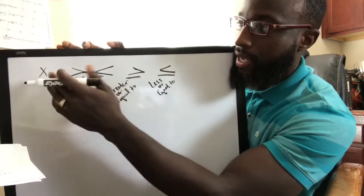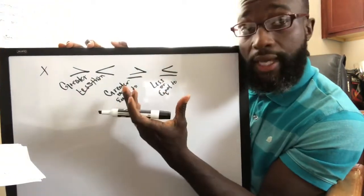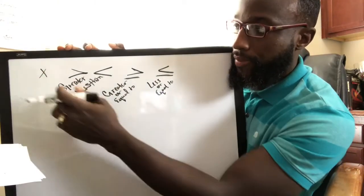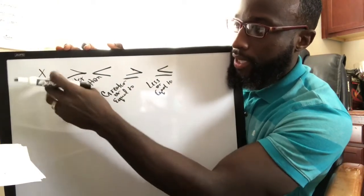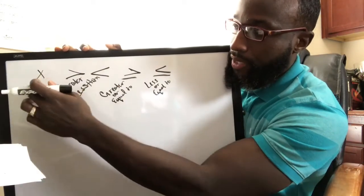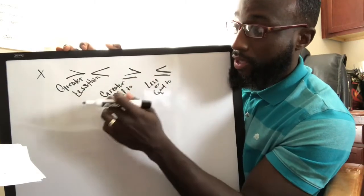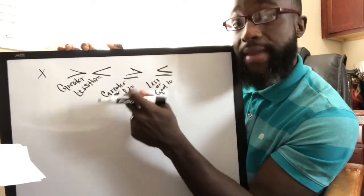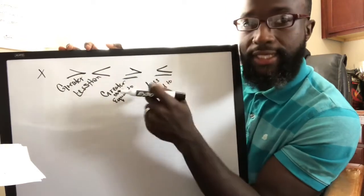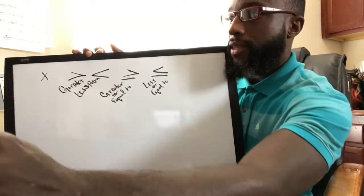Basically, it's saying that this number is going to be bigger than whatever this is, or bigger than or the same as what's over here, or less than or the same as. And those are the properties of inequalities.